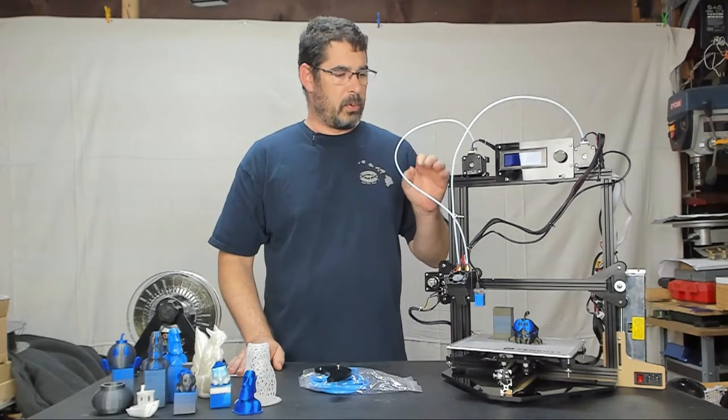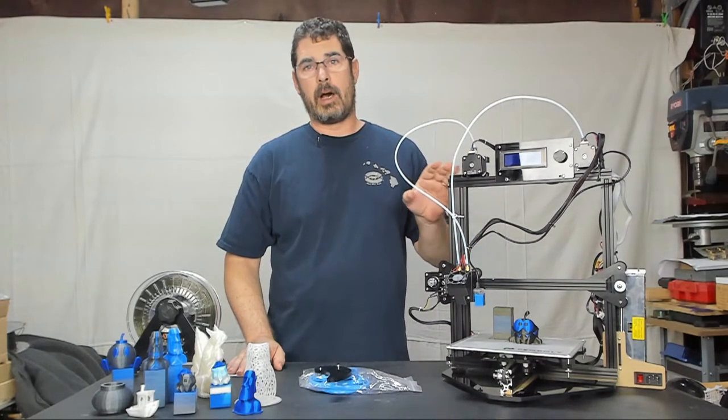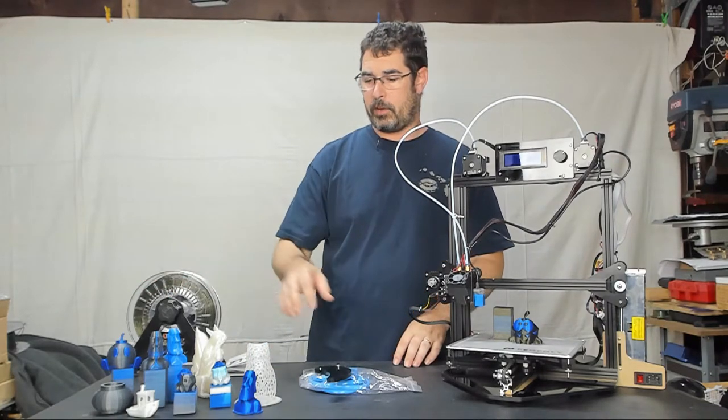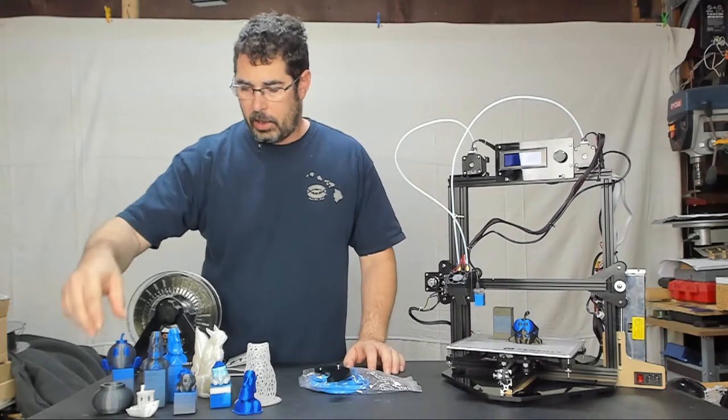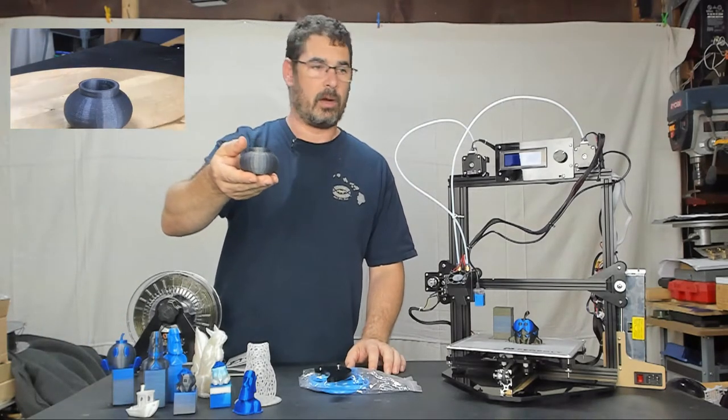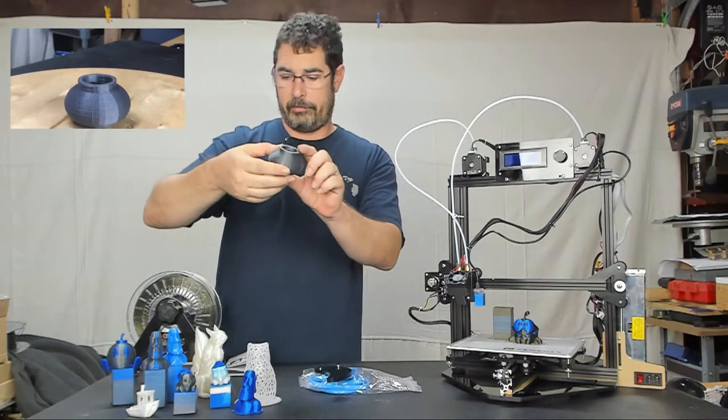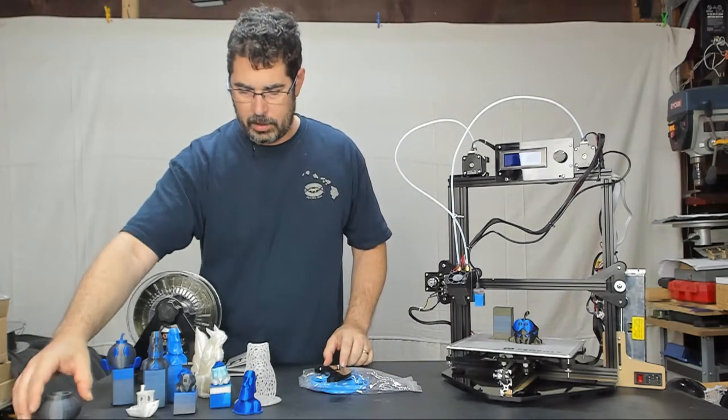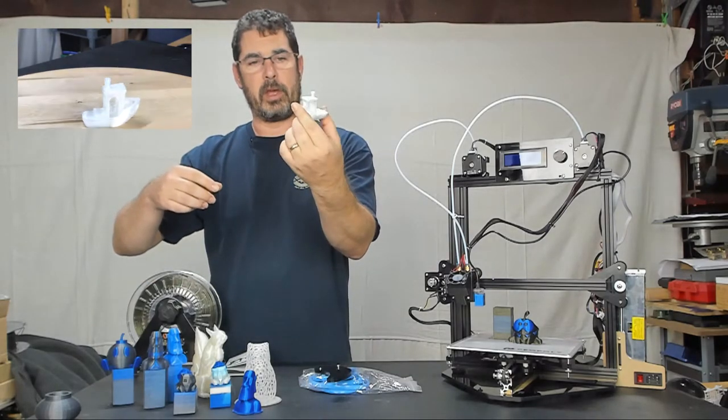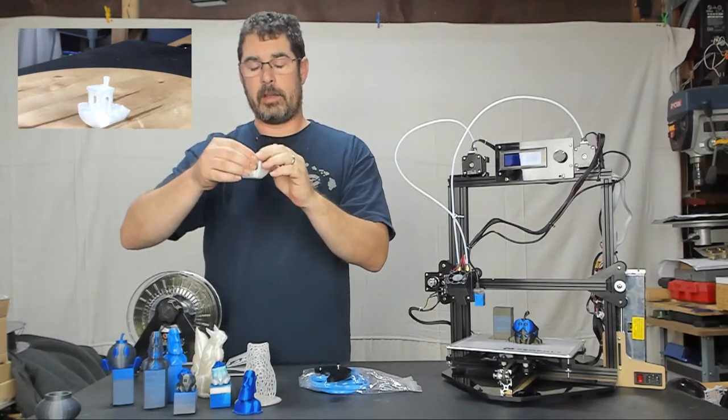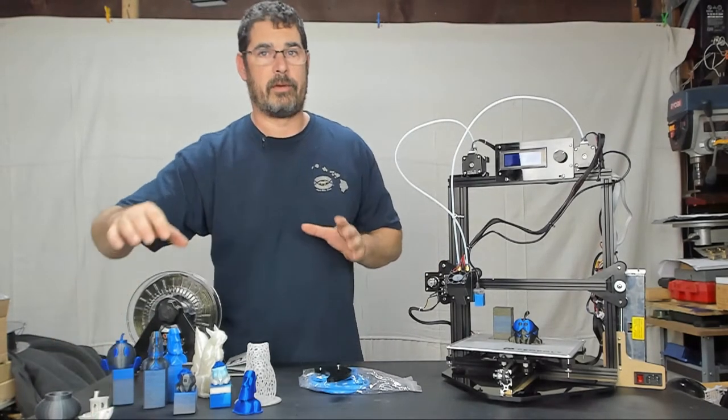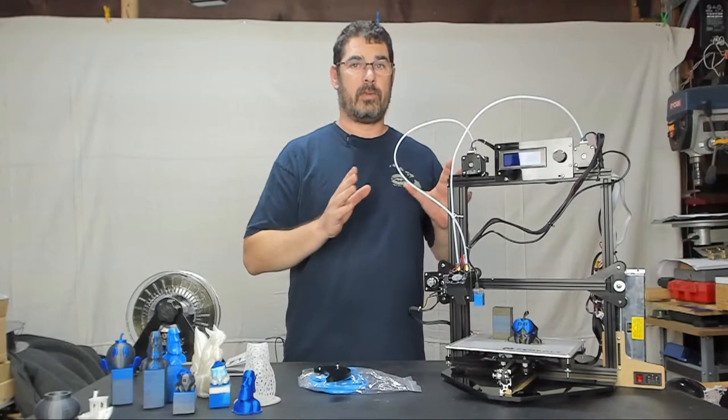Now, this printer does take a lot of dialing in to be able to get some decent dual color prints. I started off with the test print from the SD card here. It's this little vase. I moved on to a Benchy, which came out with a little bit of stringing, but it wasn't bad. And again, there was no profiles included with this, so I kind of had to create my own profile in Simplify 3D to get it printing.